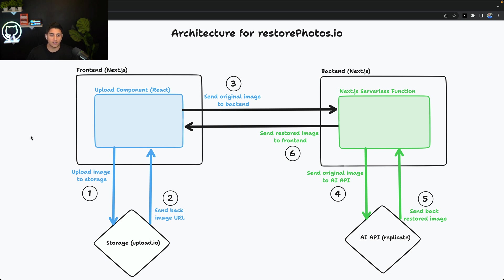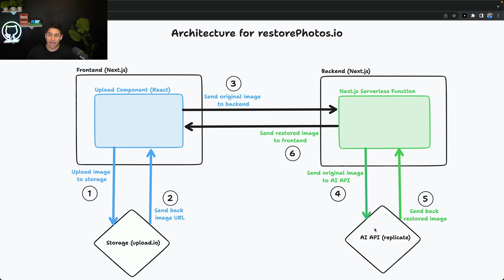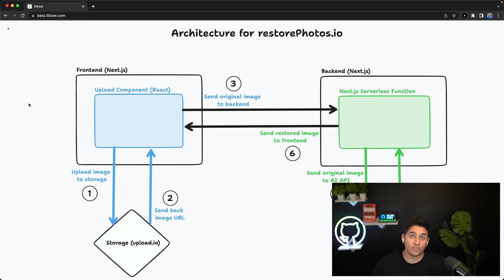The way this works is the user first uploads an image — drags and drops it or selects it, as we saw in the demo. This uploads the image to our external storage service, and the storage service responds with an image URL. We take that URL and send it to our back-end. The Next.js serverless function then passes it to our AI API to get enhanced, and after some polling, it sends back the restored image to the front-end for the user to see and download. That's an overview of the architecture — let's get into the code.